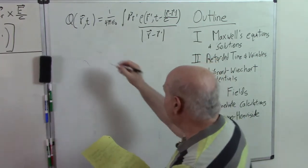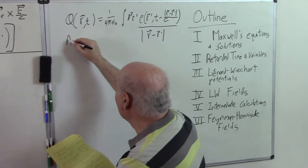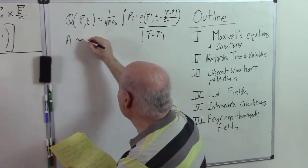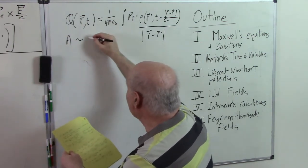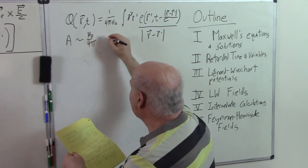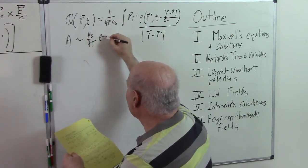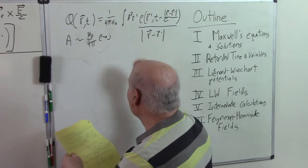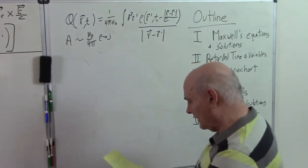Rho of r' comma t minus |r - r'|/c divided by the distance. And A is roughly the same as phi. It's got the μ_0 over 4π. And we got the j. Rho goes to j. I don't want to write that down again.